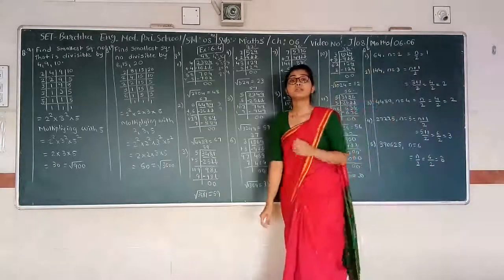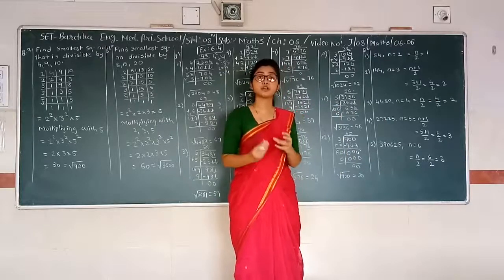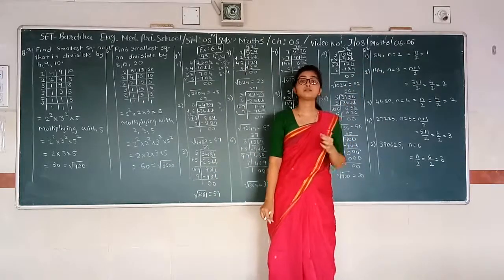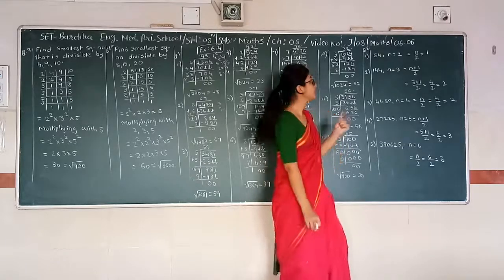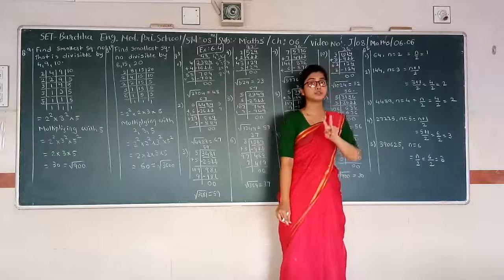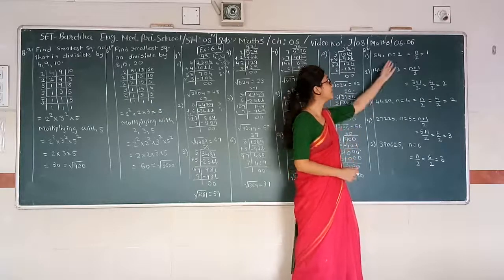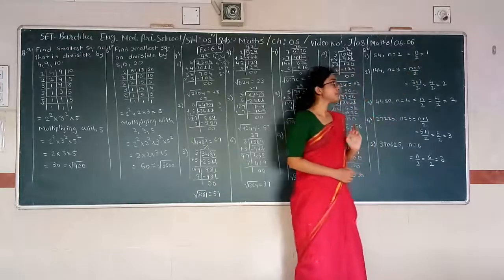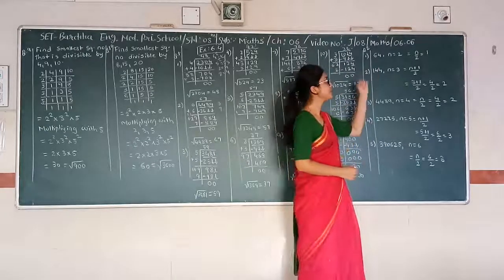Now in Question number 2, we have to find out the number of digits in the square root of given numbers. For 64, there are two digits, so N equals 2. N divided by 2 gives 1. That means the square root has 1 digit. 64 is the square of 8, which has 1 digit, and 64 has 2 digits.